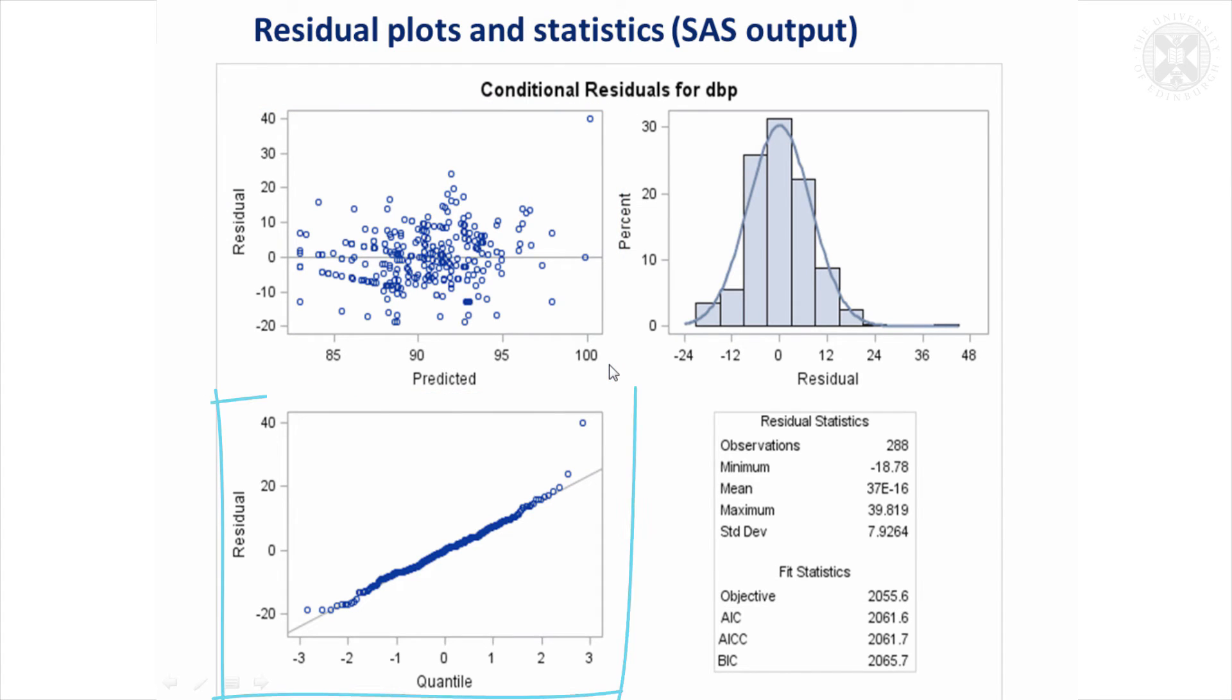This is a normal plot where we're plotting the residuals against their expected values as if they were on the normal distribution and you want that to have a pretty straight line and I think that's all okay apart from this one outlier. So we definitely want to investigate that outlier, see if there was justification for deleting it.